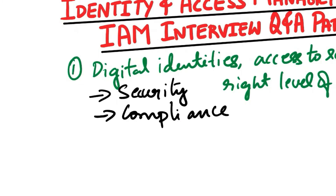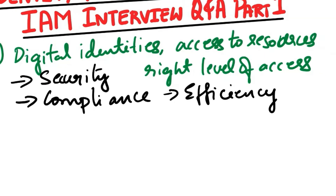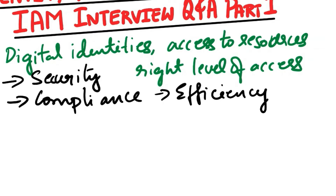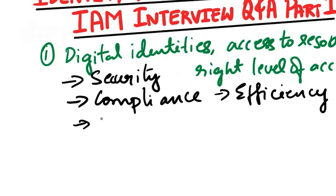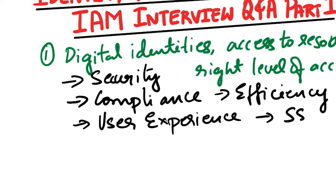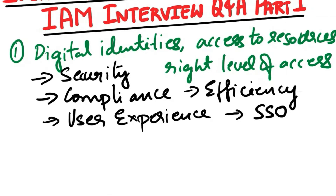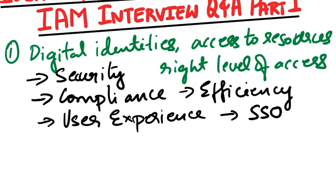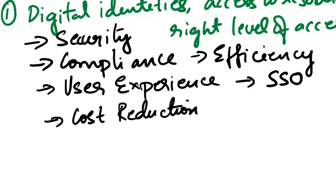Next, compliance: many industries are subject to regulations and data protection laws requiring strict control over who can access certain data, and IAM helps meet those compliance requirements. Next, efficiency: IAM streamlines the process of granting and revoking access, making it easier for administrators to manage user accounts and permissions, which also enhances productivity. Next, user experience: IAM solutions like single sign-on, SSO, enhance the user experience by reducing the need for multiple passwords and logins. Next, cost reduction: IAM helps reduce operational costs by automating identity-related tasks including onboarding and offboarding of employees, reducing administrative overhead.